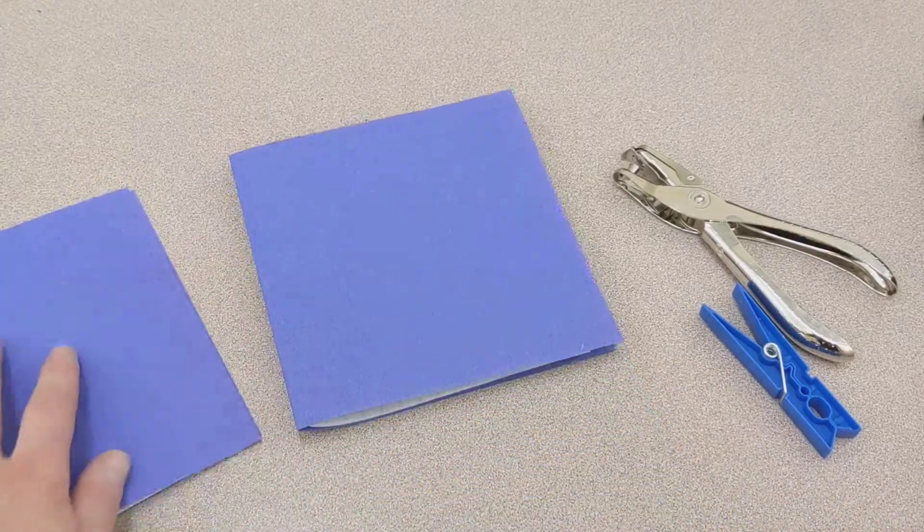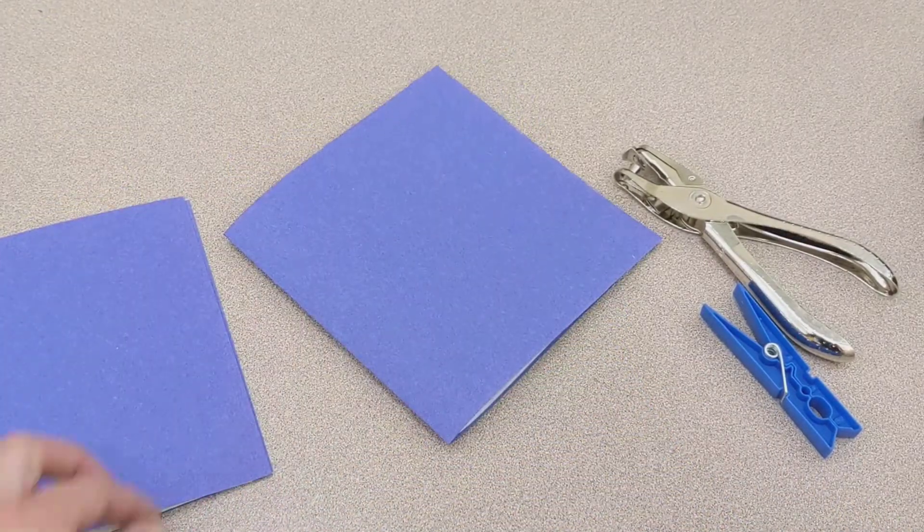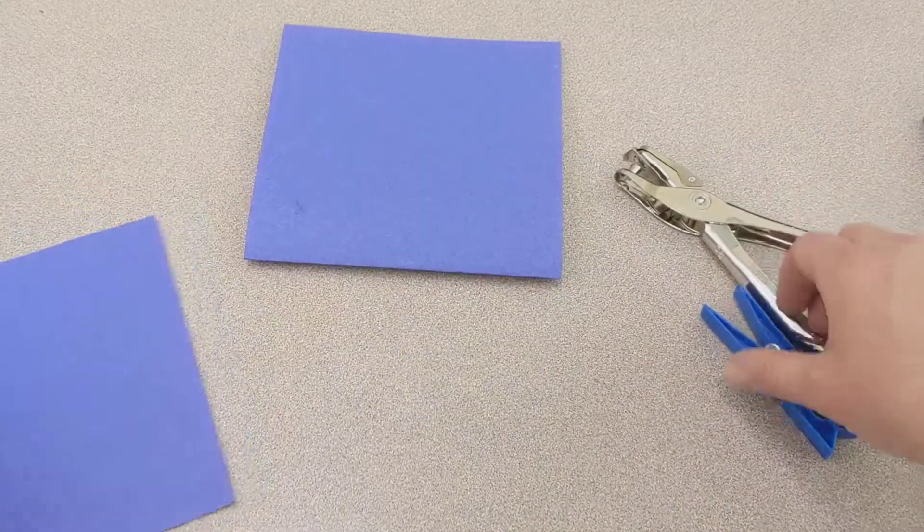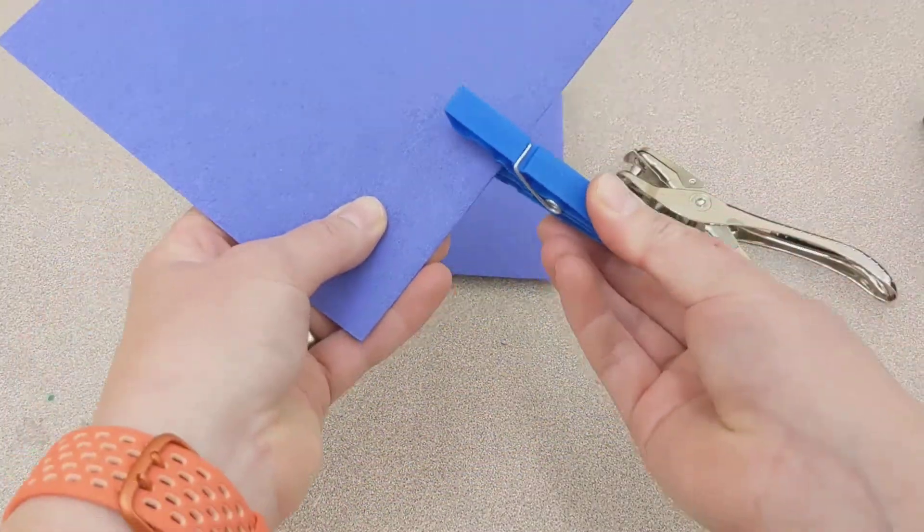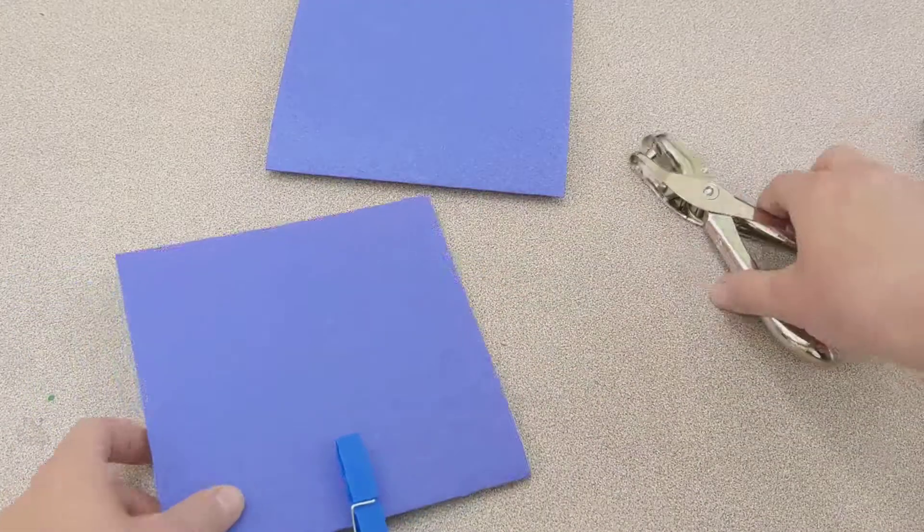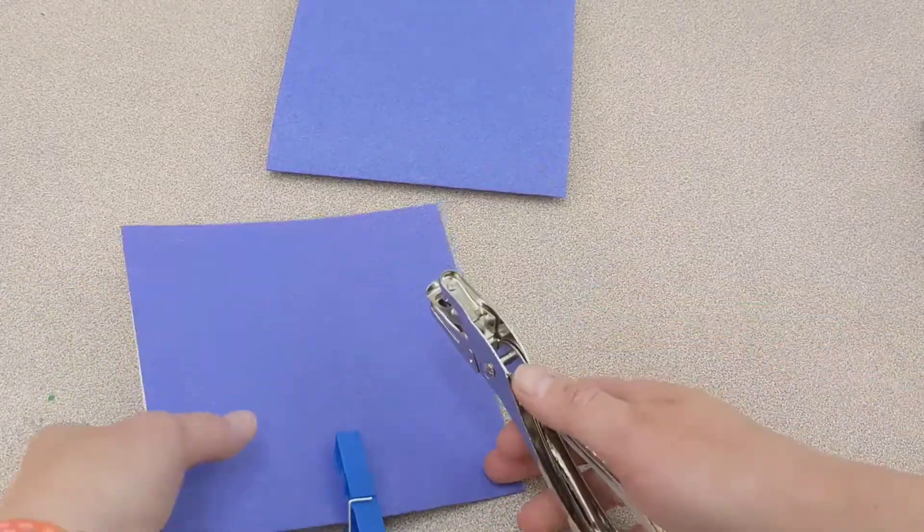So now I have two booklets ready to go, and the next thing I will need to do is punch my holes. If you're using the hand hole punch, that will work for a few sheets of paper. This won't work for more than probably five pieces of paper.